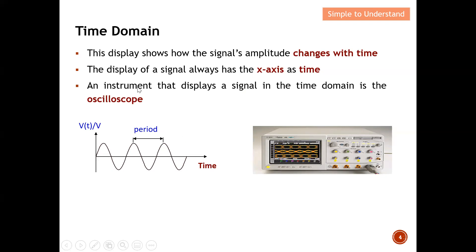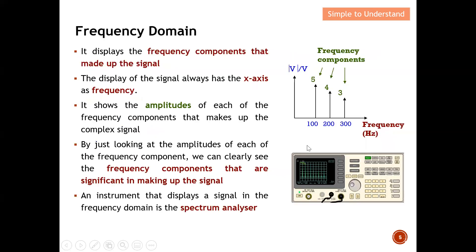An instrument that displays a signal in the time domain is the oscilloscope. This equipment, the oscilloscope, is used to show how a signal changes with time — which means it displays a time domain. So this is roughly what time domain is about.